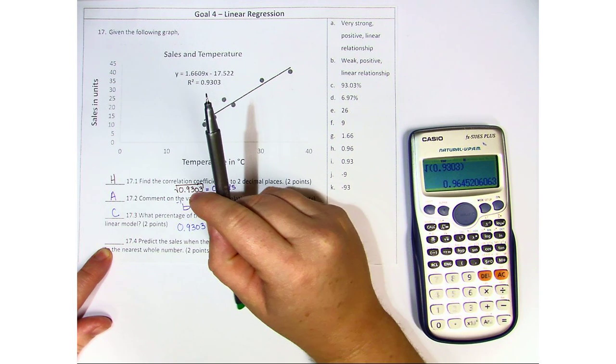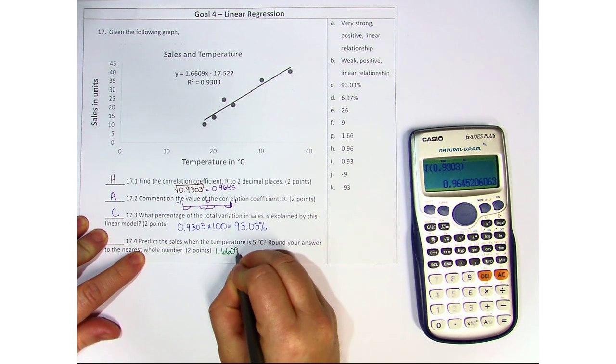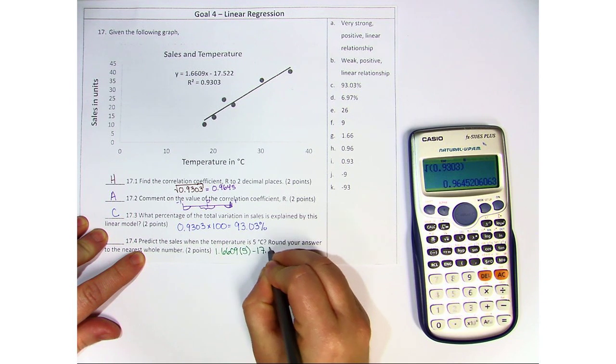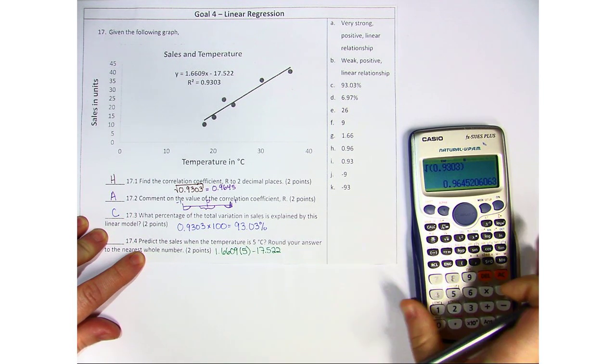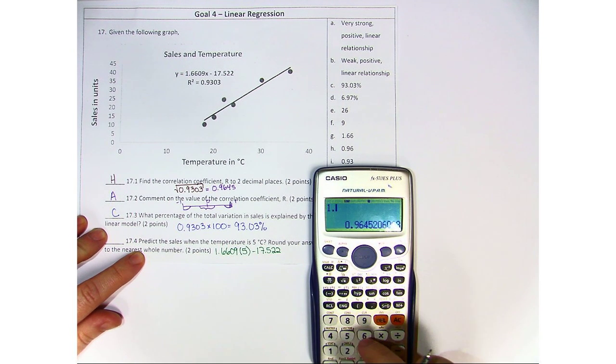But we're still going to plug it into the formula that was given. So we do 1.6609 times 5 minus 17.522. We're going to go ahead and get out our calculator for this. So 1.6609 times 5 minus 17.522.